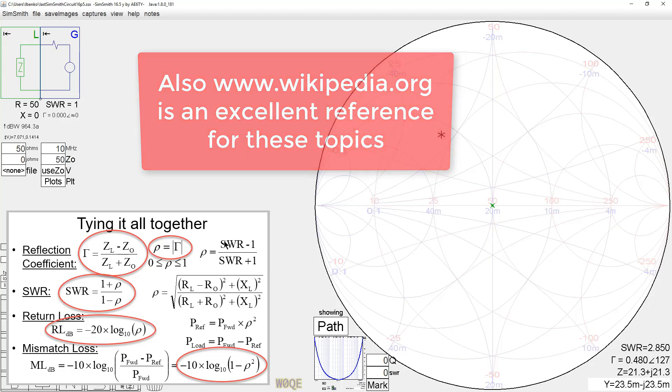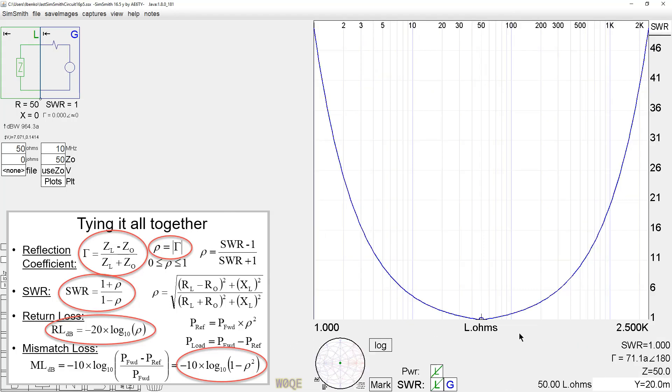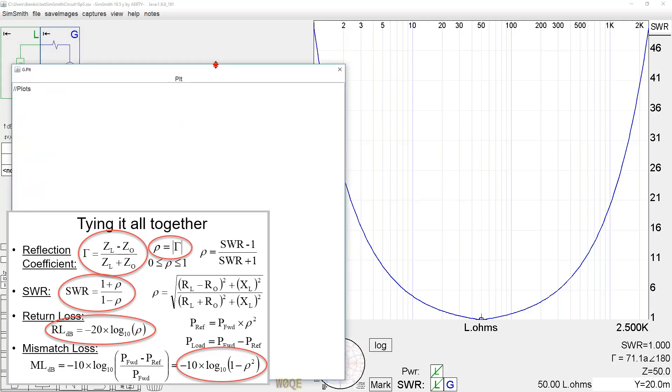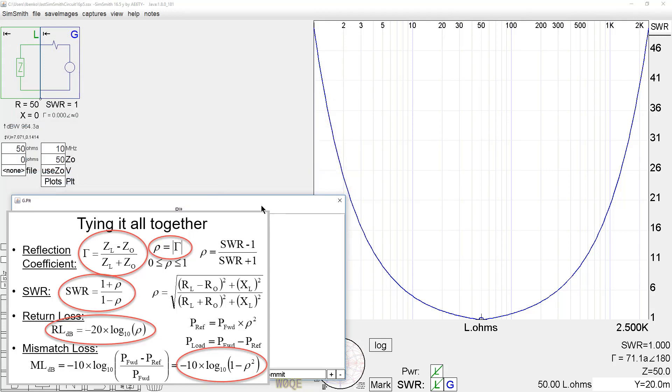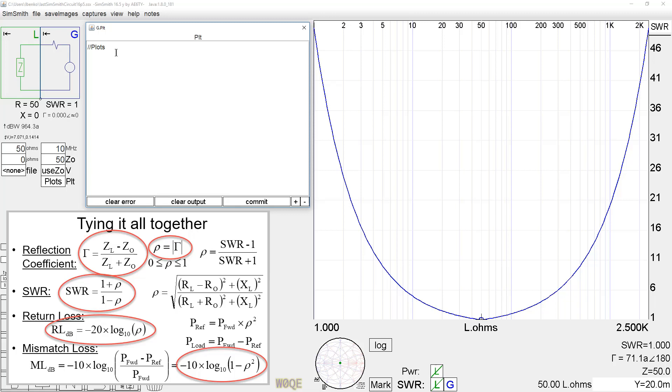Now, let's see what we can do to get SimSmith to plot return loss. If we look in any book that has RF topics in it, these kind of formulas appear all the time. Gamma is basically the plot of the Smith chart, and we do this math with complex numbers.